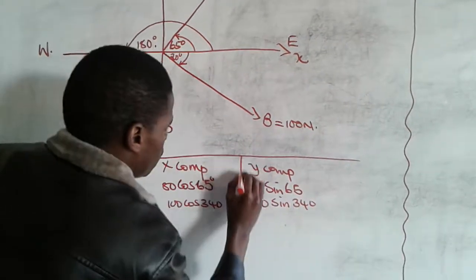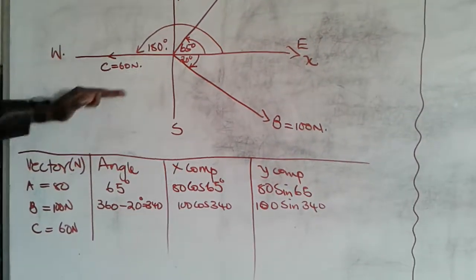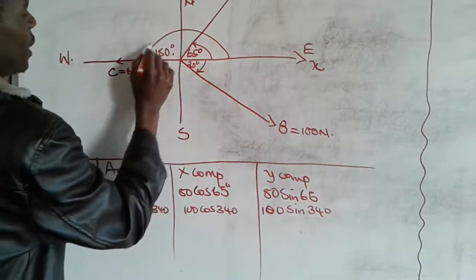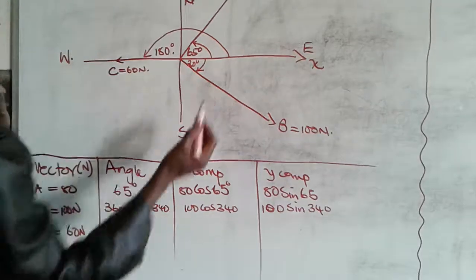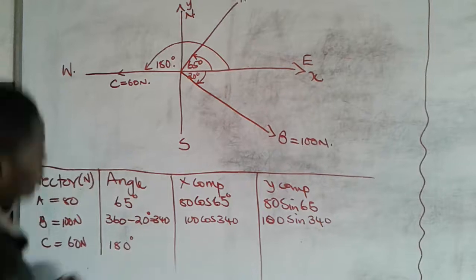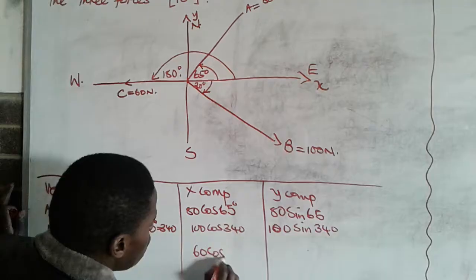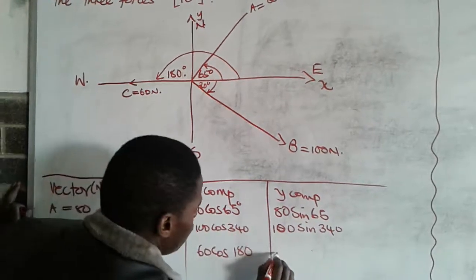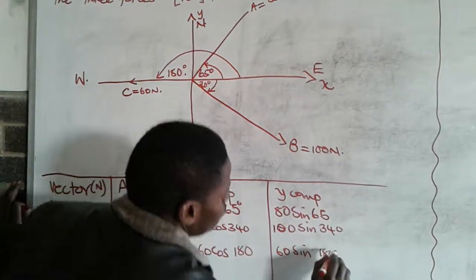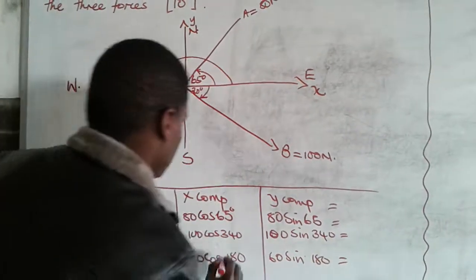For vector C, the angle is 180 degrees, which we can use directly. The x-component is 60 cos 180° and the y-component is 60 sin 180°.